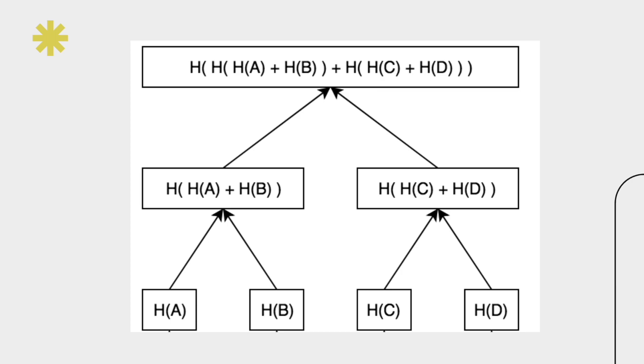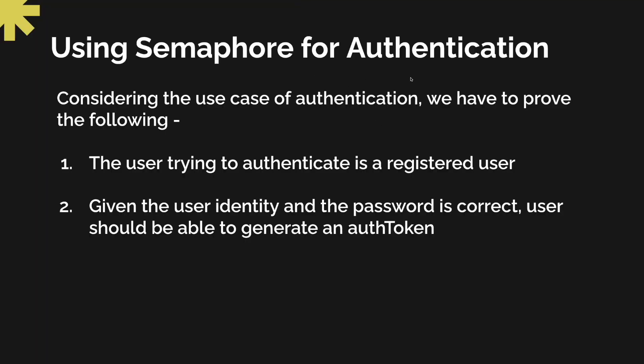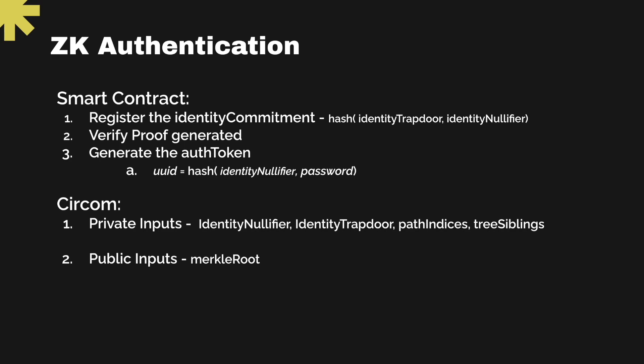Now let's consider the use case of authentication, which works similarly to what we've seen for signaling. In this use case, a user is trying to authenticate on a web2 or web3 platform that has integrated semaphore as authentication. What we have to prove is that the user is a registered user, and given the correct user identity and password, the user should be able to generate an auth token. Again, there are certain things achieved using smart contracts and certain things using the ZK part via circuits.